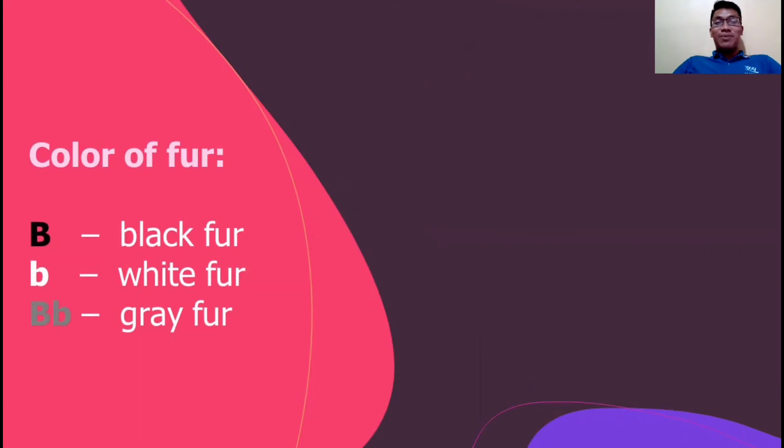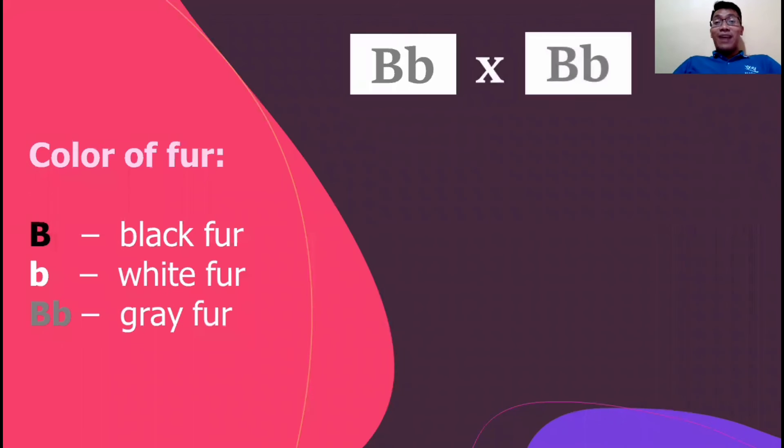We're gonna use the same symbols. We have two grey rabbits represented by a capital B and small b. Now law of segregation during the formation of gametes, their sperm or egg cell may have a capital B or small b. We know that the capital B is for black fur and small b represents the white fur trait.